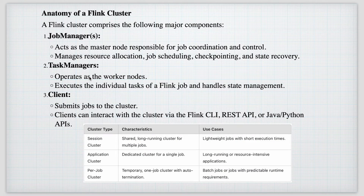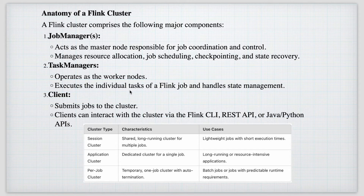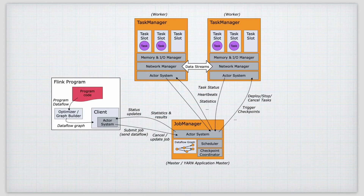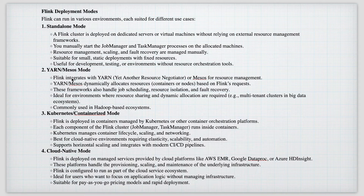There are three major things to know. First, the Job Manager acts as the master node, responsible for job coordination and control — managing resource allocation, job scheduling, checkpointing, and state recovery. Second, the Task Manager operates as the worker node; actual code execution is done inside Task Managers, inside task slots. Third, the client is what we submit the job from.